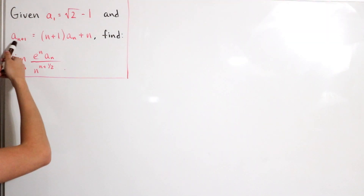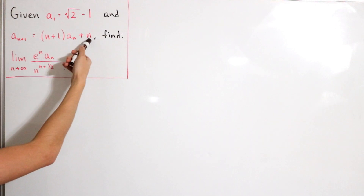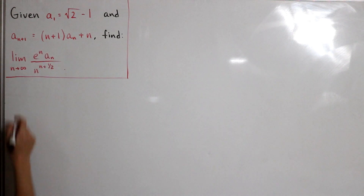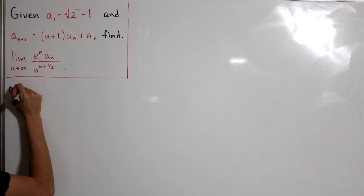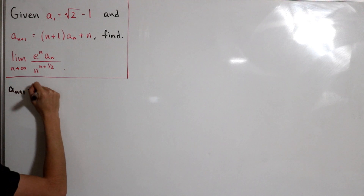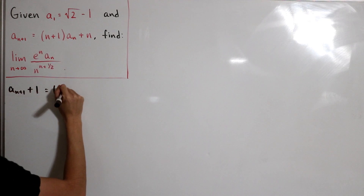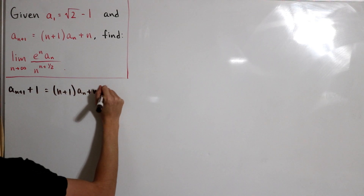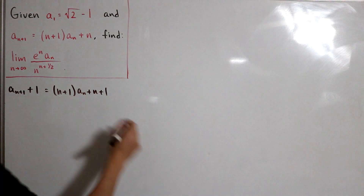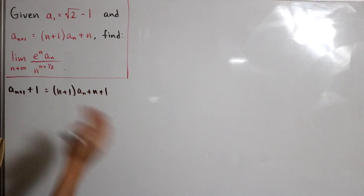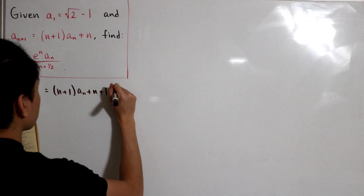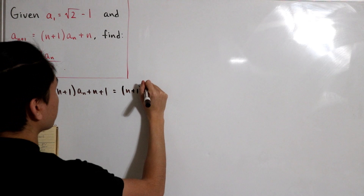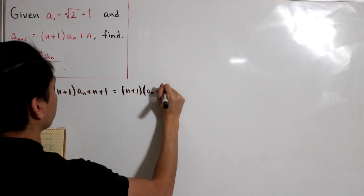Given a sub n+1 for the following sequence, suppose we add 1 to the index of our generalization. So a sub (n+1)+1 becomes (n+1)·a sub n plus (n+1). You can clearly see there are two factors of n+1 here, so in a way it forms binomial factors — we can say this is just (n+1) times (a sub n + 1).